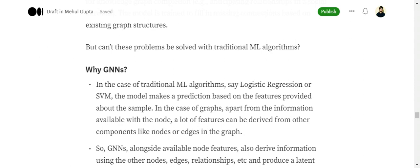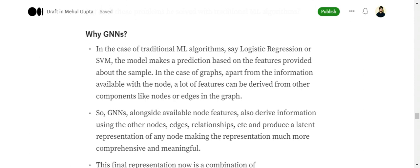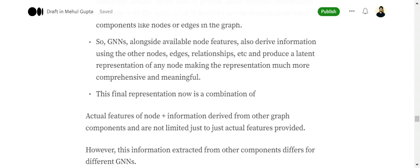Now, in the case of GNNs, what happens is GNNs also use information from the graph itself. It's able to aggregate features from neighboring nodes, from edges, from the relationships present in the graph, and enhances the feature set available with a particular sample. Then it produces a latent vector representation of the node.